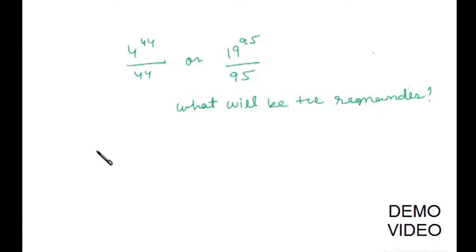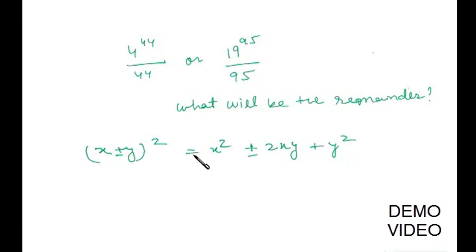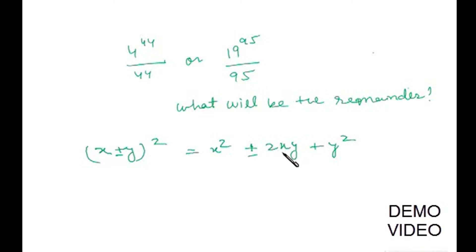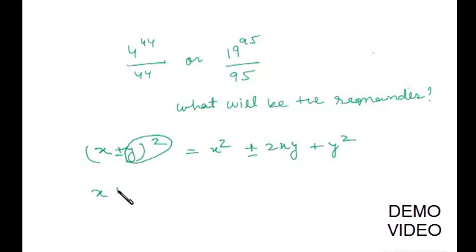Let me give a quick recap of the algebraic logic. Consider (x+y)^2 = x²±2xy+y². When the entire expansion is divided by x, every term containing x² gives remainder zero, but y² divided by x gives remainder y². Similarly, dividing by y gives remainder x². This principle extends to higher powers.